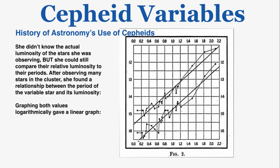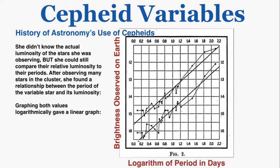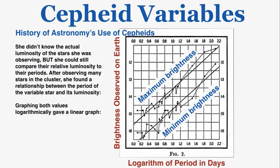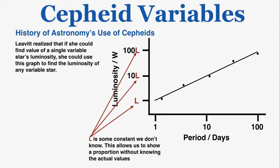Because she was graphing relative luminosity compared to each other, the y-axis is made up of numbers all multiplied by some constant that we don't know. This allows us to show a proportion without knowing the actual values. A simplified version of her graph shows this relationship clearly: if the period of one variable star is ten days and another is only one day, the ten-day star's luminosity will be about ten times as large as the one-day star's.